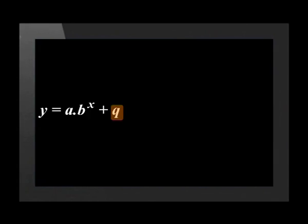The q value is the value of the horizontal asymptote. The a value tells us where to place the graph in relation to the asymptote — it can also stretch the graph. And the b value tells us if the graph is moving towards or away from the asymptote.